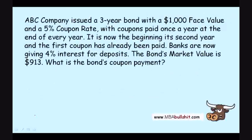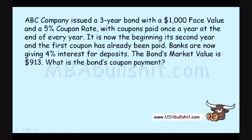ABC Company issued a 3-year bond with a $1,000 face value and a 5% coupon rate, with coupons being paid once a year at the end of every year. It is now the beginning of its second year and the first coupon has already been paid. Bonds are now giving 4% interest for deposits. The bond's market value is $913.